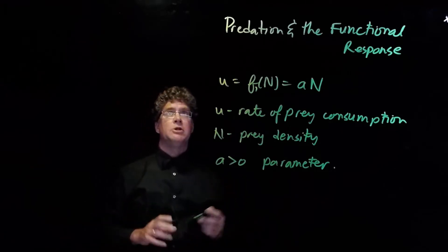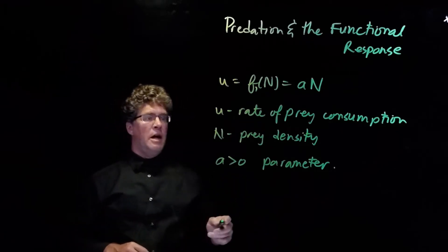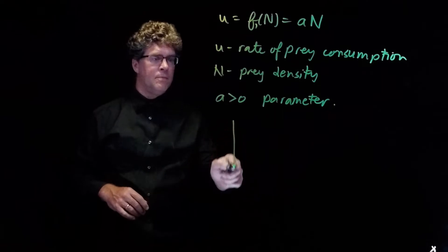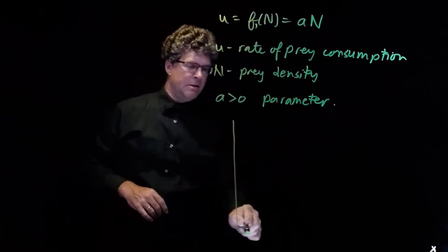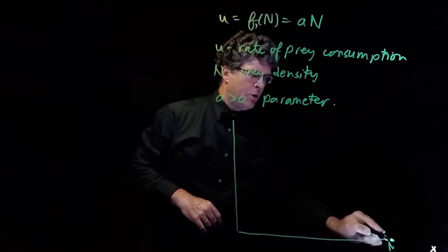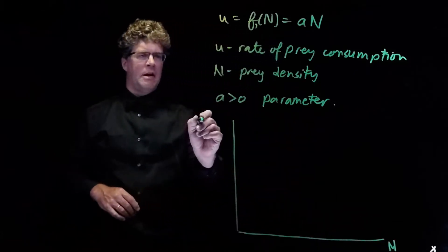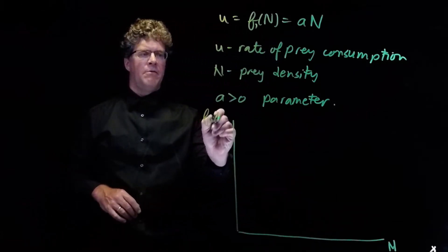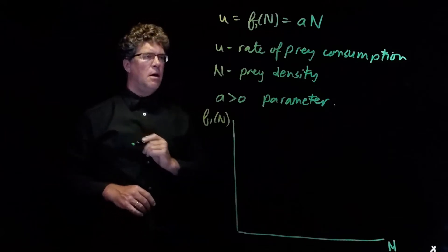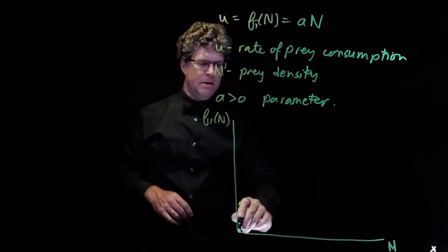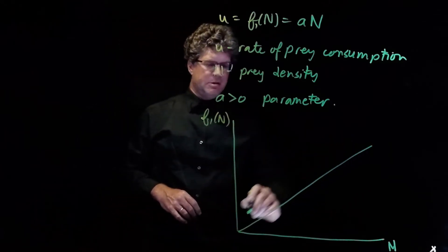So if we were going to plot this function f1, it would look like this. We'd put n, the prey density, on the horizontal axis, and f1 of n on the vertical axis. And it would be a straight line.